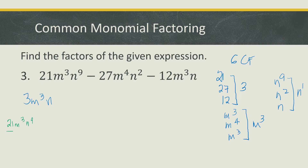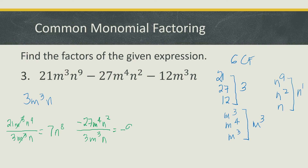Divide each term by 3m cubed n. For the first term, 21m cubed n to the 9th divided by 3m cubed n: 21 divided by 3 is 7, m cubed cancels to 1, and n to the 9th divided by n gives n to the 8th. For the second term, negative 27m to the 4th n squared divided by 3m cubed n: negative 27 divided by 3 is negative 9, m to the 4th divided by m cubed gives m, and n squared divided by n gives n.